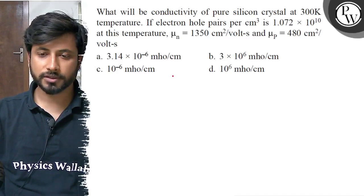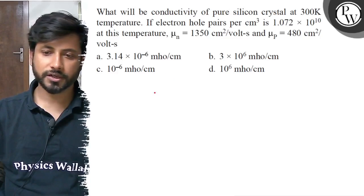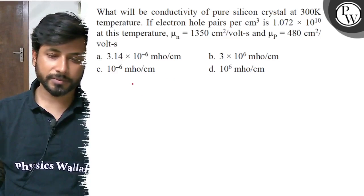6 mho per centimeter, option b: 3 into 10 to the power 6 mho per centimeter, option c: 10 to the power minus 6 mho per centimeter, option d: 10 to the power 6 mho per centimeter. So the first